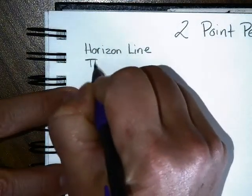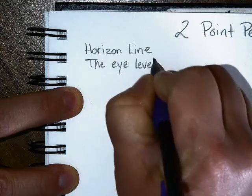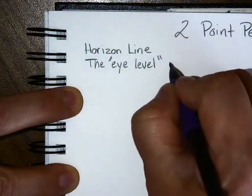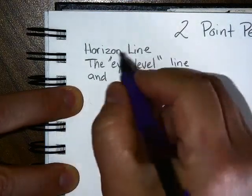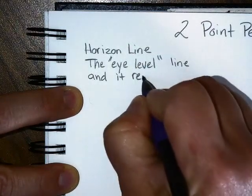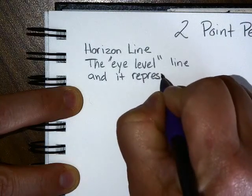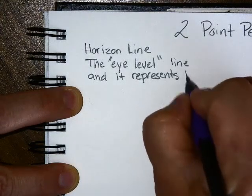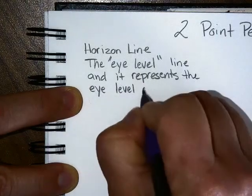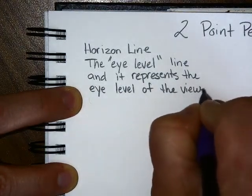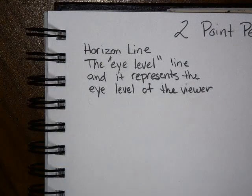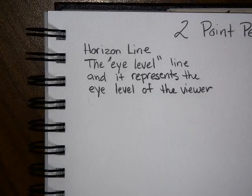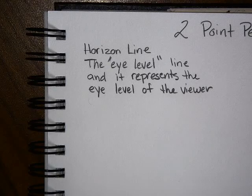So the horizon line is the eye level. Sometimes people just call it the eye level line, and it represents the eye level of the viewer. So if you were to take a box and held your supply box directly in front of your face at eye level, how many sides of the box would you see? You would only see one. If you need to do this, you should have your supply boxes with you because you need the eraser out of it.